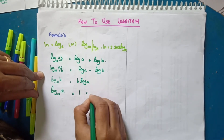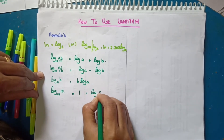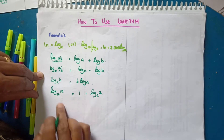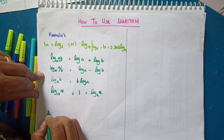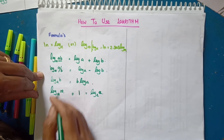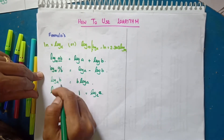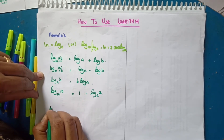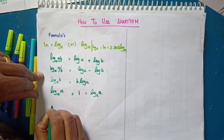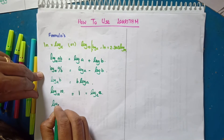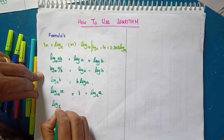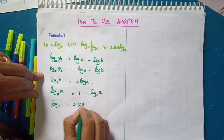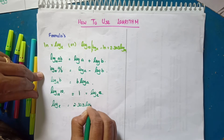Log e base e is equal to 1. So if you use these 4 formulas, you will do these 4 formulas. This is the solution — it has to be easier. Log e is equal to 2.303 log 10. So in your textbook, use paper on the side. If you use the formulas and work, you will solve these problems.